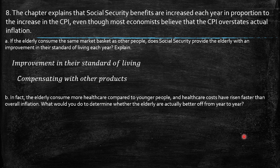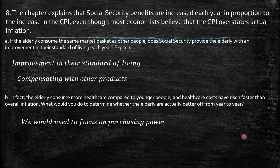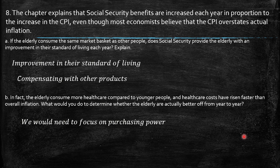In fact, the elderly consume more healthcare compared to younger people, and healthcare costs have risen faster than overall inflation. What would you do to determine whether the elderly are actually better off year to year? We need to focus on purchasing power. If healthcare costs have risen faster than overall inflation and Social Security benefits have increased less than that, then with other products they may be compensating. We're also talking about elasticity — the elderly are more inelastic to changes in prices of healthcare, so even if prices increase, they continue to consume those goods.